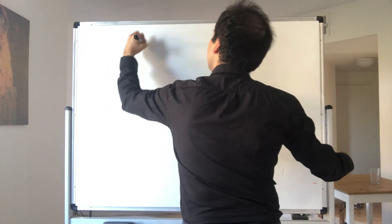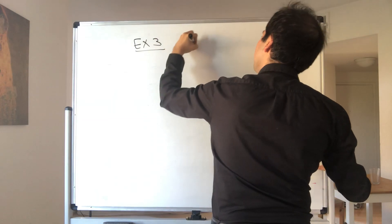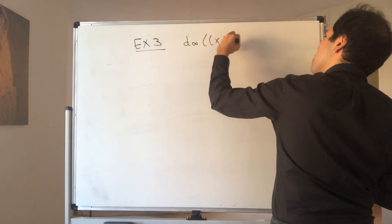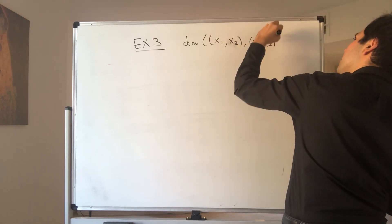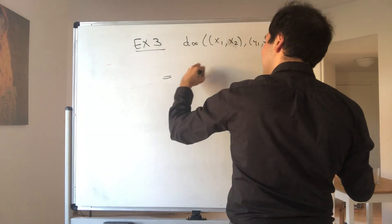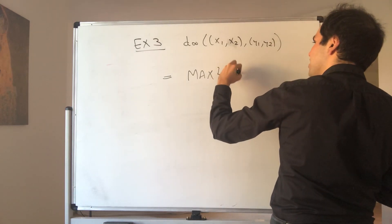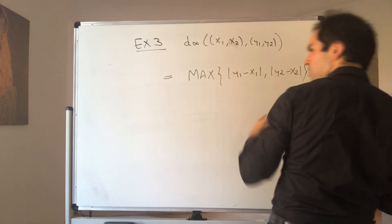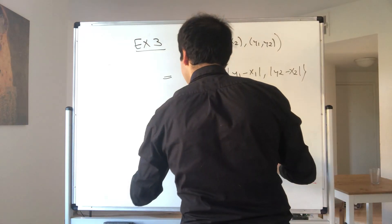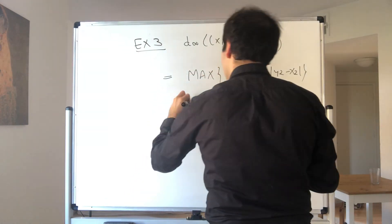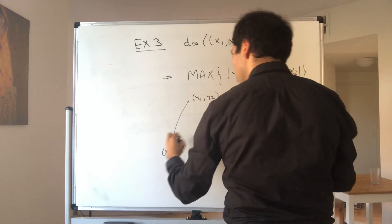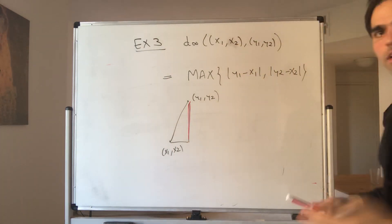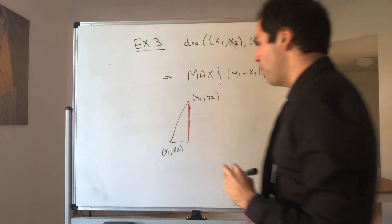Example three: the infinity metric D∞ of (x1, x2) and (y1, y2). This time, instead of considering the sum of the legs, you're considering the biggest one of the legs: the max of |y1 minus x1| and |y2 minus x2|. So again, you have this triangle between (x1, x2) and (y1, y2), and you're just considering the biggest leg. Let's see what this ball looks like.